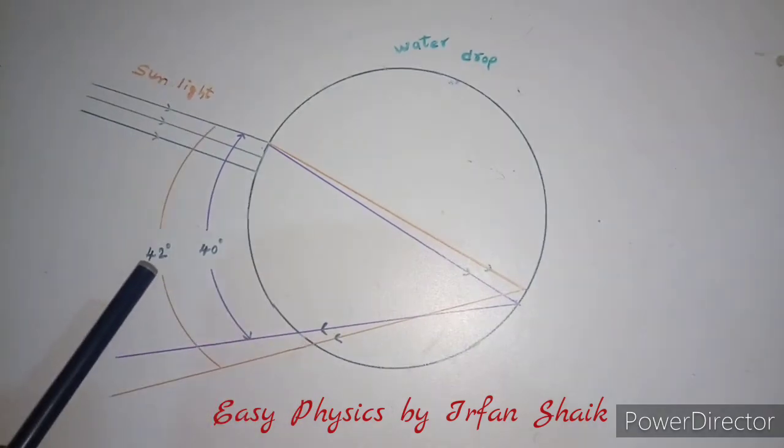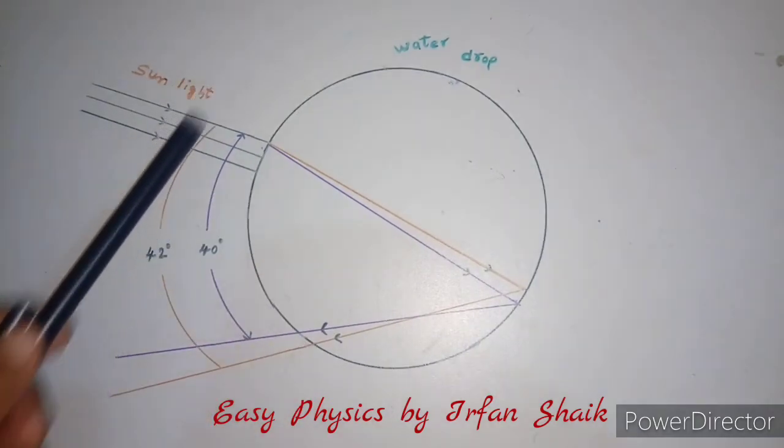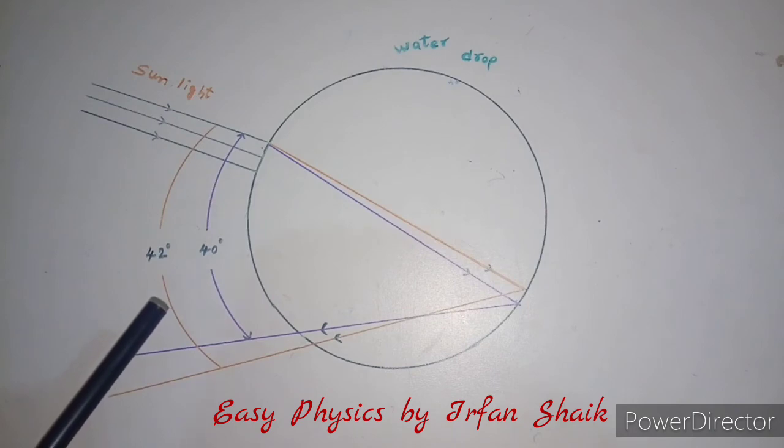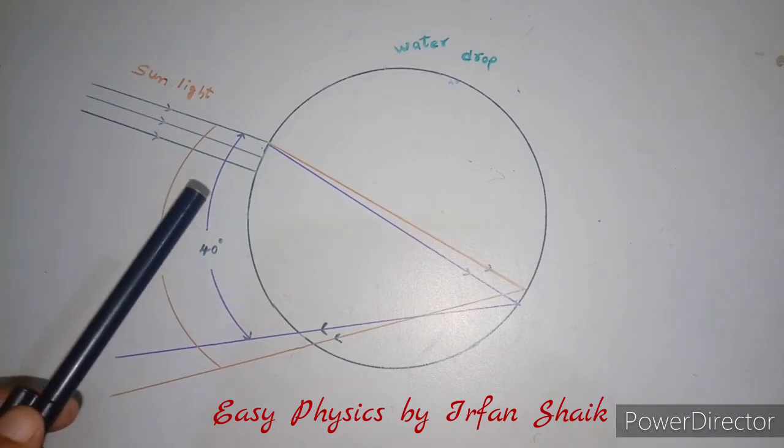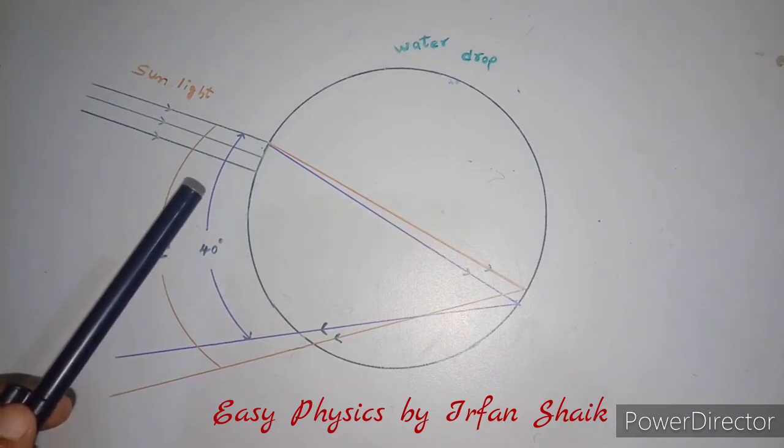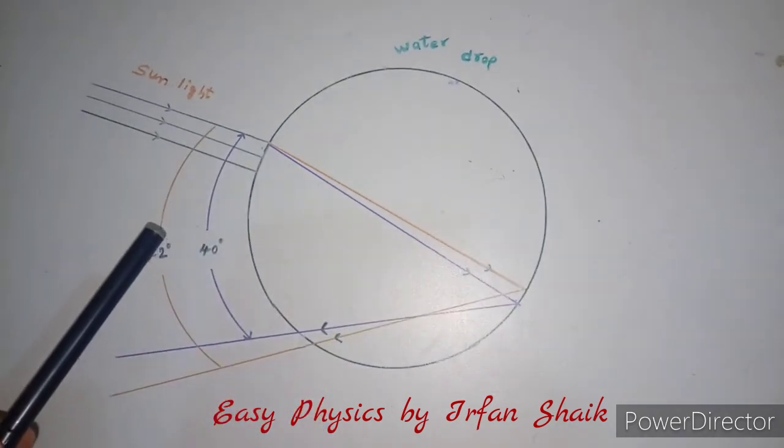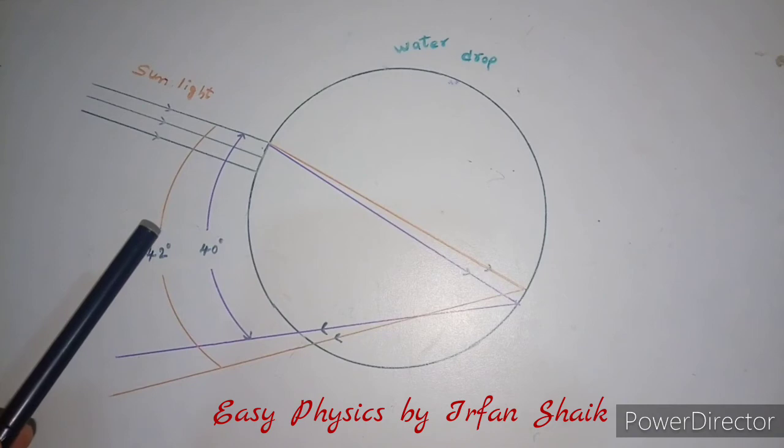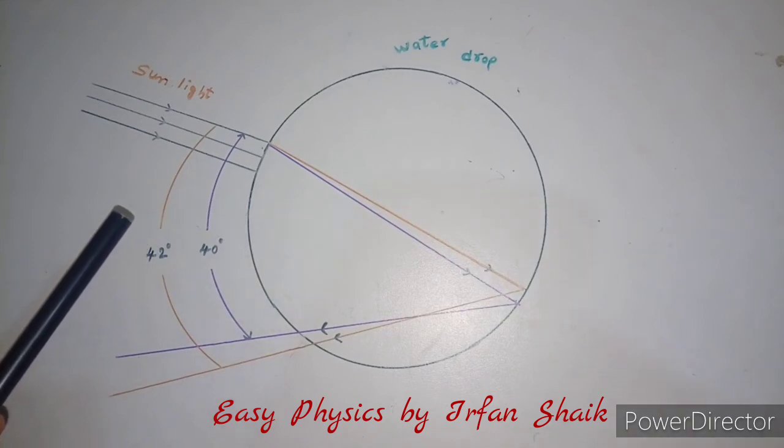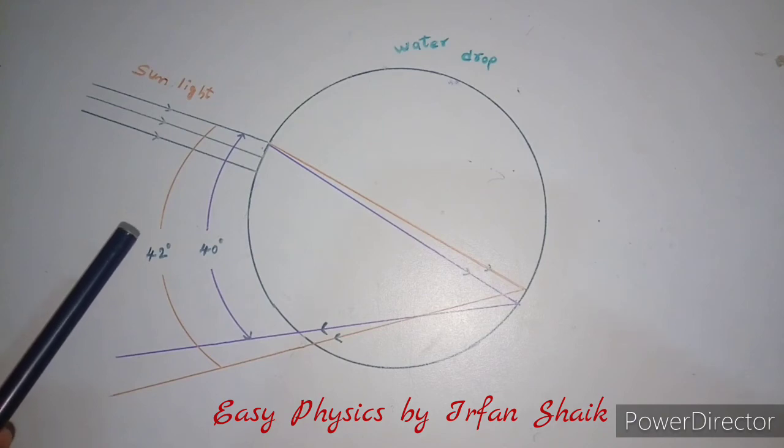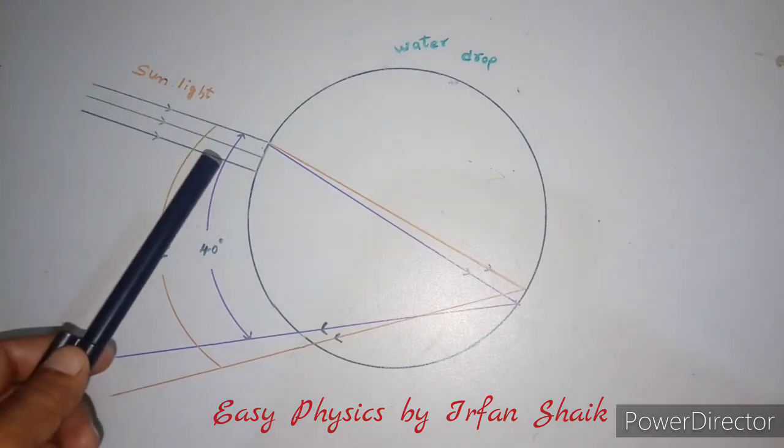We observe a bright rainbow when the angle between incoming and outgoing rays is near the maximum of 42 degrees. The color violet is seen when the angle between the sunbeam and the light sent back by a drop is 40 degrees.